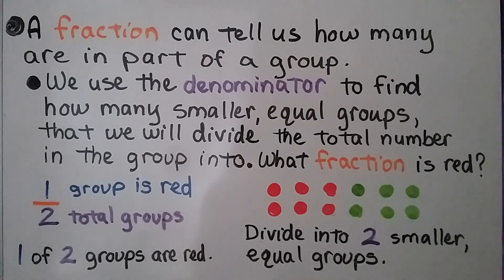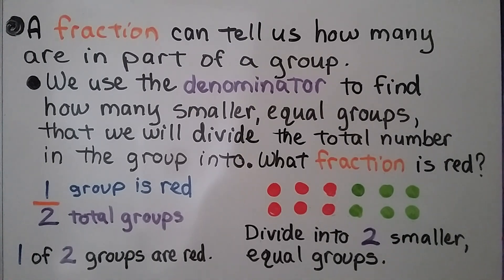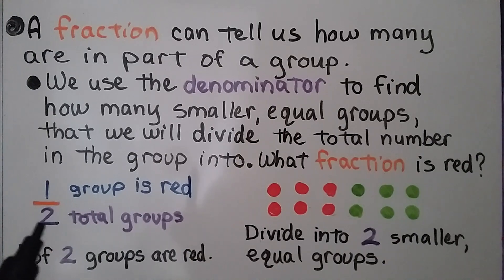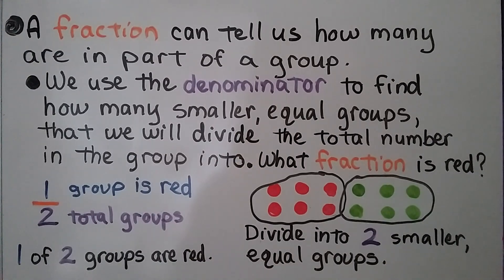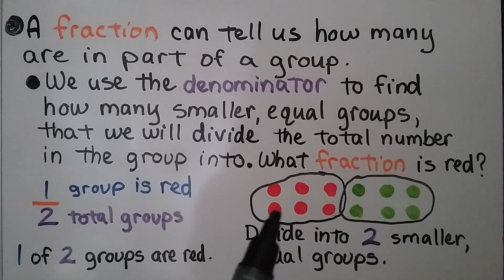So, what fraction of these dots are red? We divide it into two smaller equal groups because the denominator is a 2. We see that one of the two groups are red, so half are red.